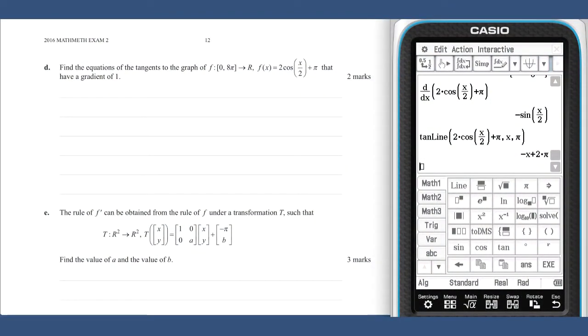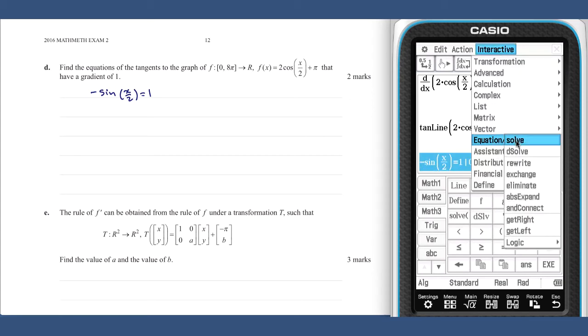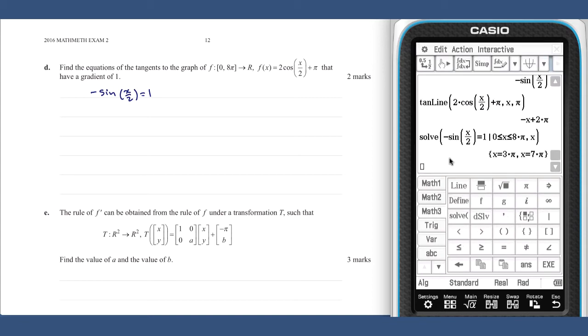The x-coordinates of the tangents required can be found by solving minus sine of x on 2 equals 1. Using our class pad we can take our derivative, set it equal to 1, supply the domain and solve. So we have our x values of 3 pi and 7 pi.